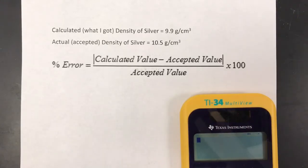Hi everybody, this is Mr. Claus and this is a quick reminder about how to use the percent error formula. Percent error is when you're calculating something that already has a known value.